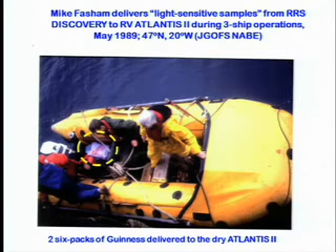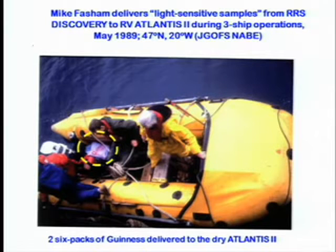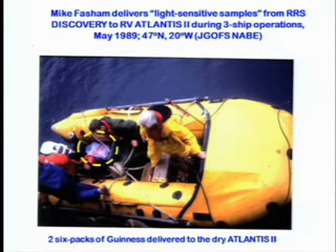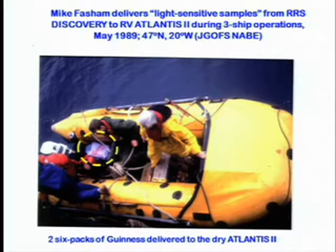For those of you in the back of the room who can't see the bottom of the screen — the light-sensitive samples were a couple of contraband six-packs of Guinness delivered to the American colleagues on the U.S. vessel. As you may know, U.S. ships are pretty aggressively dry. So this was a really important contribution of Mike to the U.S. oceanographic effort at the time. And they were consumed not in the light.